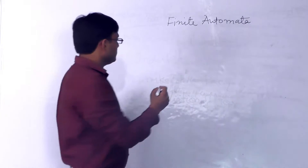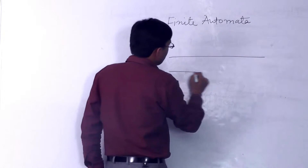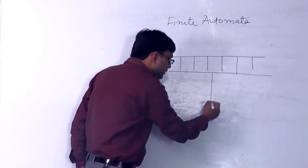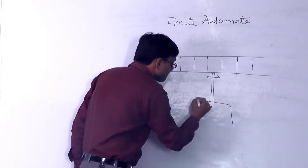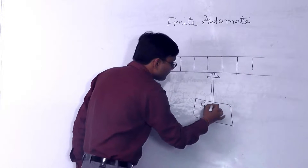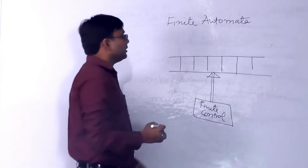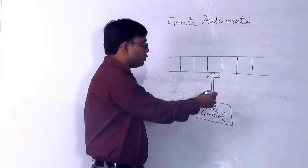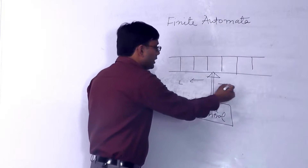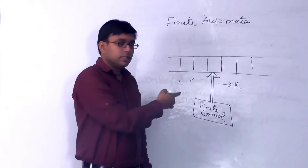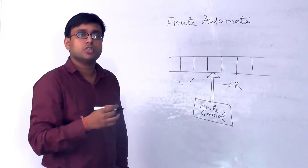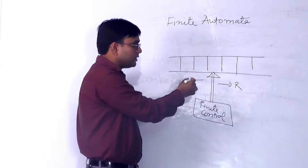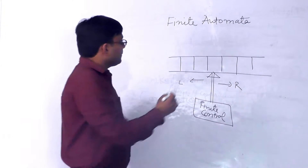Finite automata is considered as a machine having an input tape and a finite control associated with it. The input tape is used for reading inputs while the finite control can move in both directions, left or right. If the finite control can move in both directions, the machine is known as a more generalized version called a Turing machine. If we restrict it to move only in a single direction, then this is finite automata.